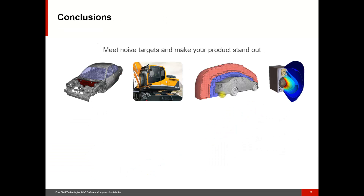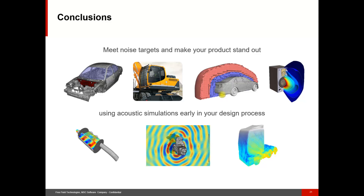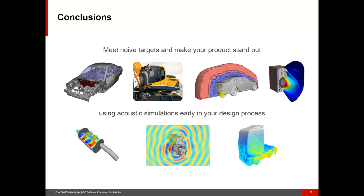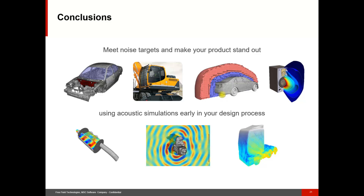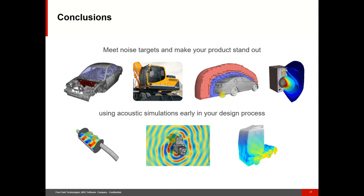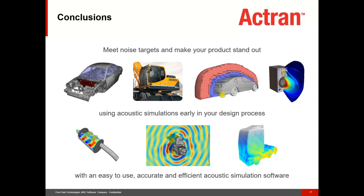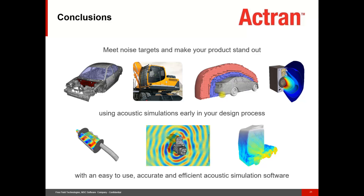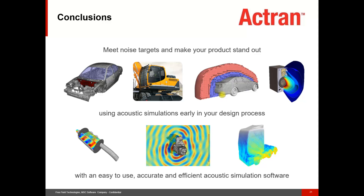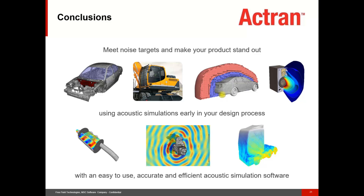To conclude this presentation, whatever the industry and the product you are working on, you are probably observing an increasing focus on acoustic considerations — whether it comes from regulations, customer expectations, or a will to differentiate your product through a striking acoustic signature. We have seen that rather than doing acoustic surgery, we should try to integrate better acoustics in the development process. Numerical simulations can help you do that while reducing prototype testing costs and providing better knowledge of the physical phenomena. Actron Acoustics is an easy-to-use, accurate and efficient acoustic simulation software. It can be integrated very easily in your existing simulation process thanks to its coupling with most other numerical simulation software. So if you need to reduce noise or improve the sound quality of your product, Actron is the tool that will help you meet your objectives.